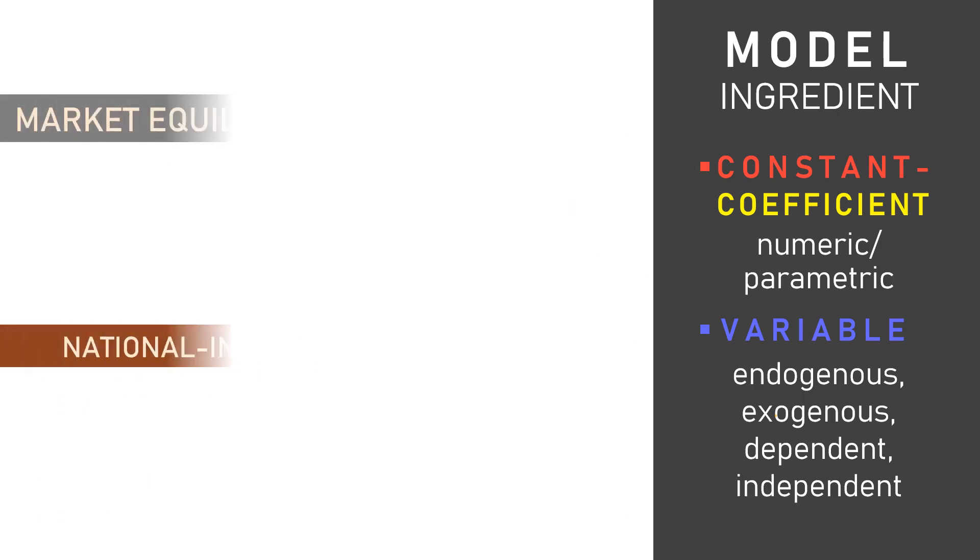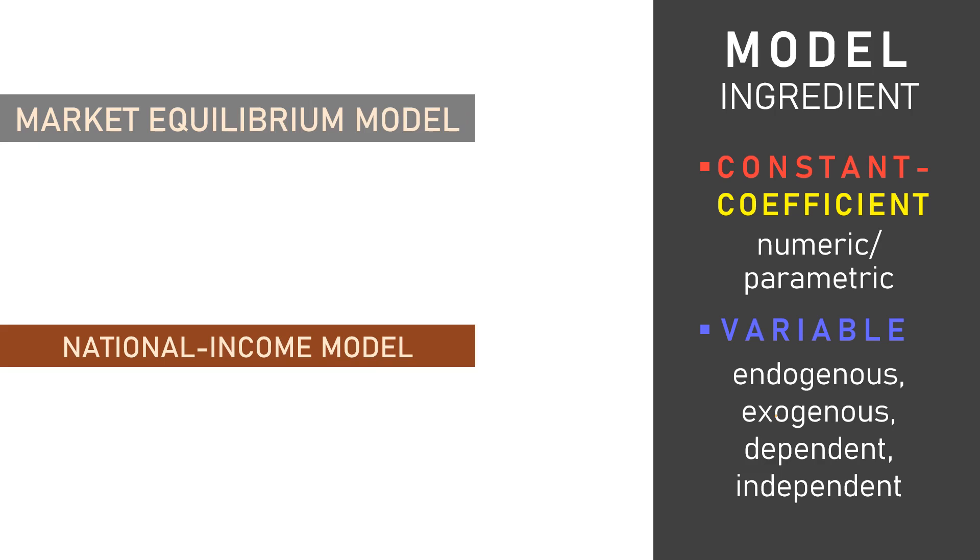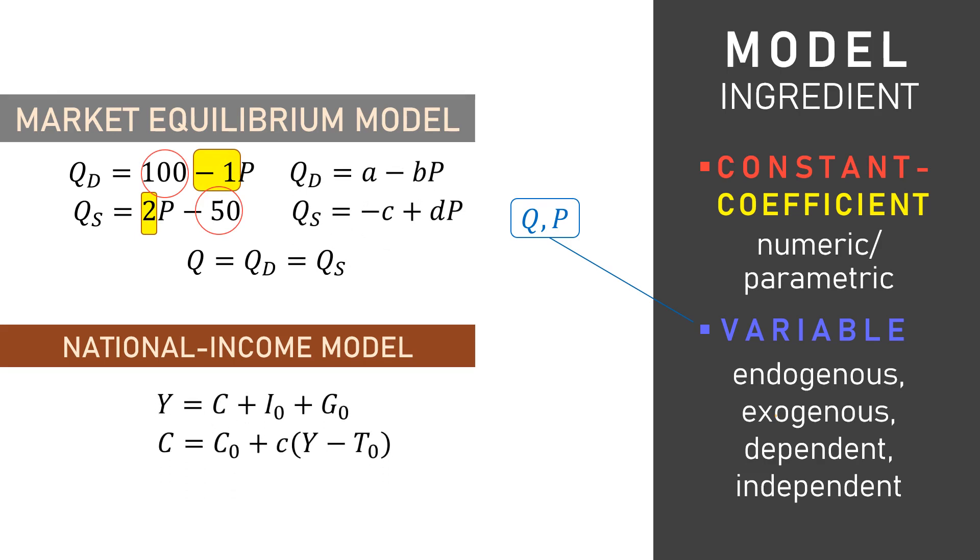Okay, let's again return to these two models. Finding constants and coefficients in numerical function like this will be easy. We have Q and P as our variables. Then the rest must be constants and coefficients. Now, how if we have this equation instead, or these equations? Since we still know the variables which are usually clearly defined in economic models, Q and P again in the first model, and all symbols but C in the second model, so the other letters or symbols must be parameters representing either constant or coefficient. Parameter A and C are the constants. Then B and D, as well as C in the second model, are the coefficient.